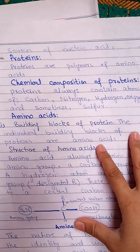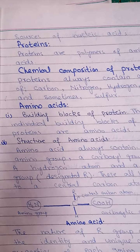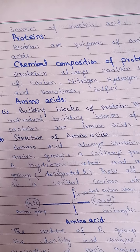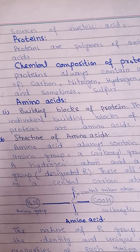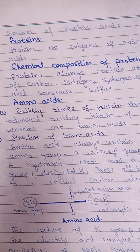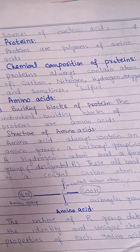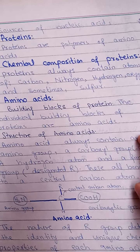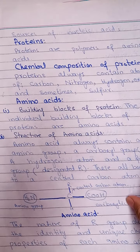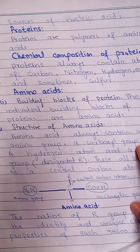Now let's talk about protein. Proteins are the polymers of amino acids, and amino acids are the individual building blocks of proteins. In our body, proteins are composed of elements including carbon, nitrogen, oxygen, hydrogen, and sulfur.